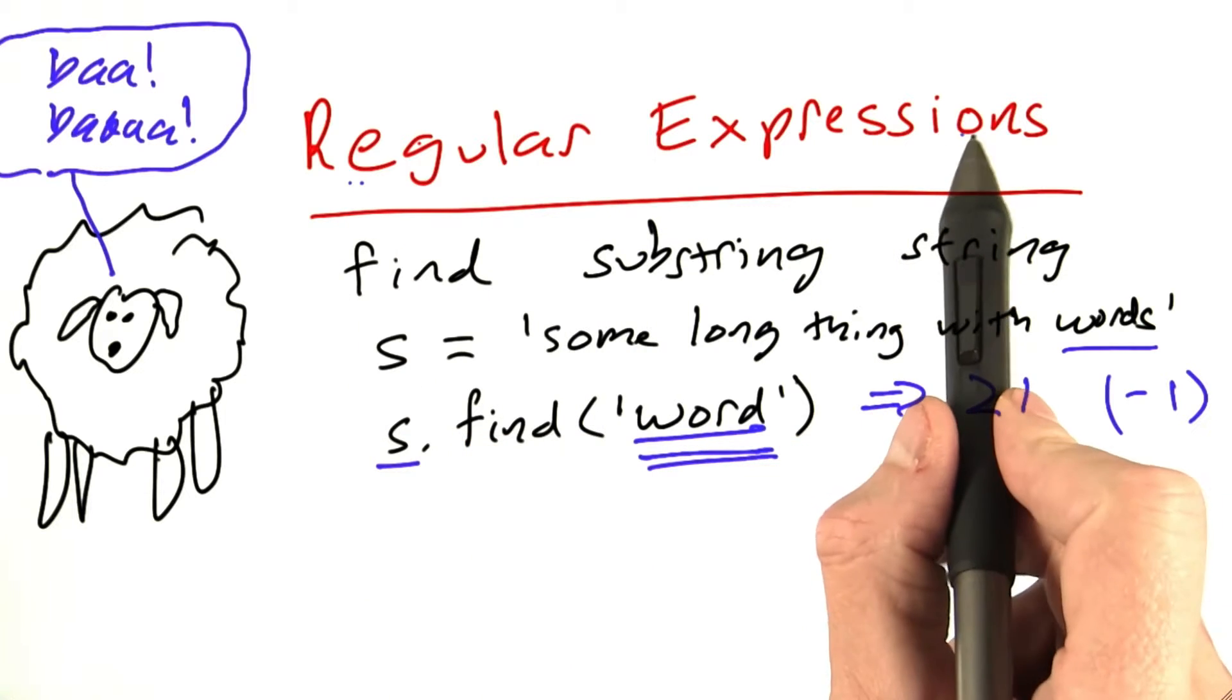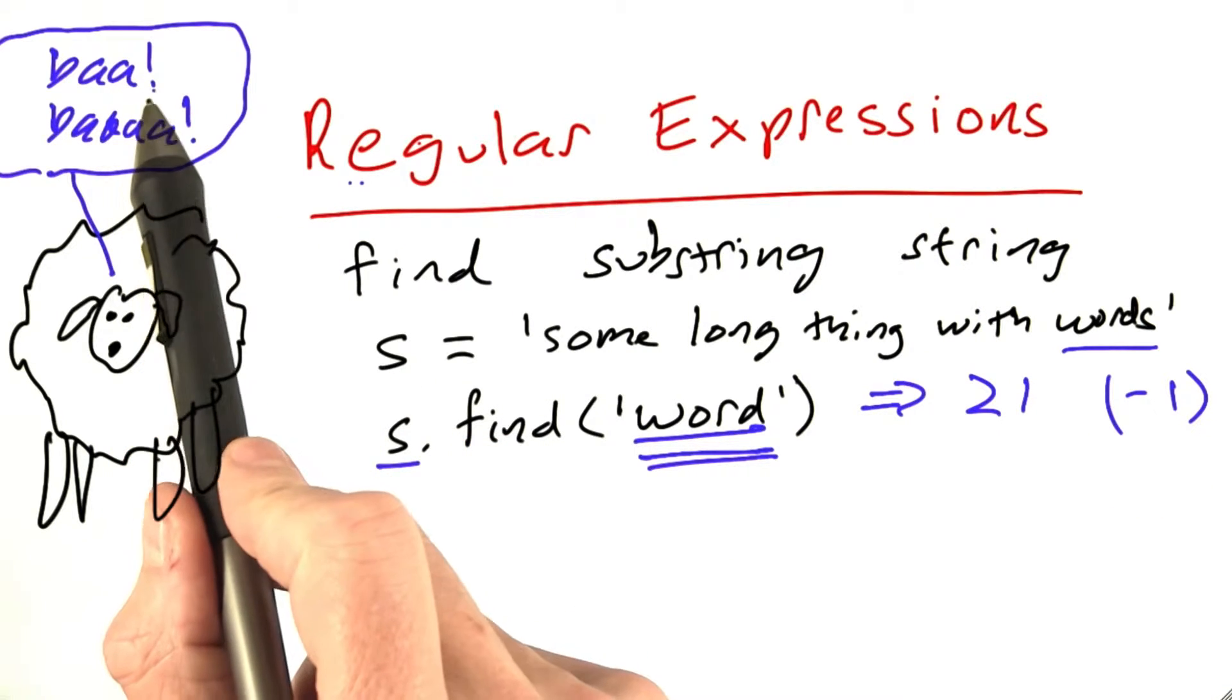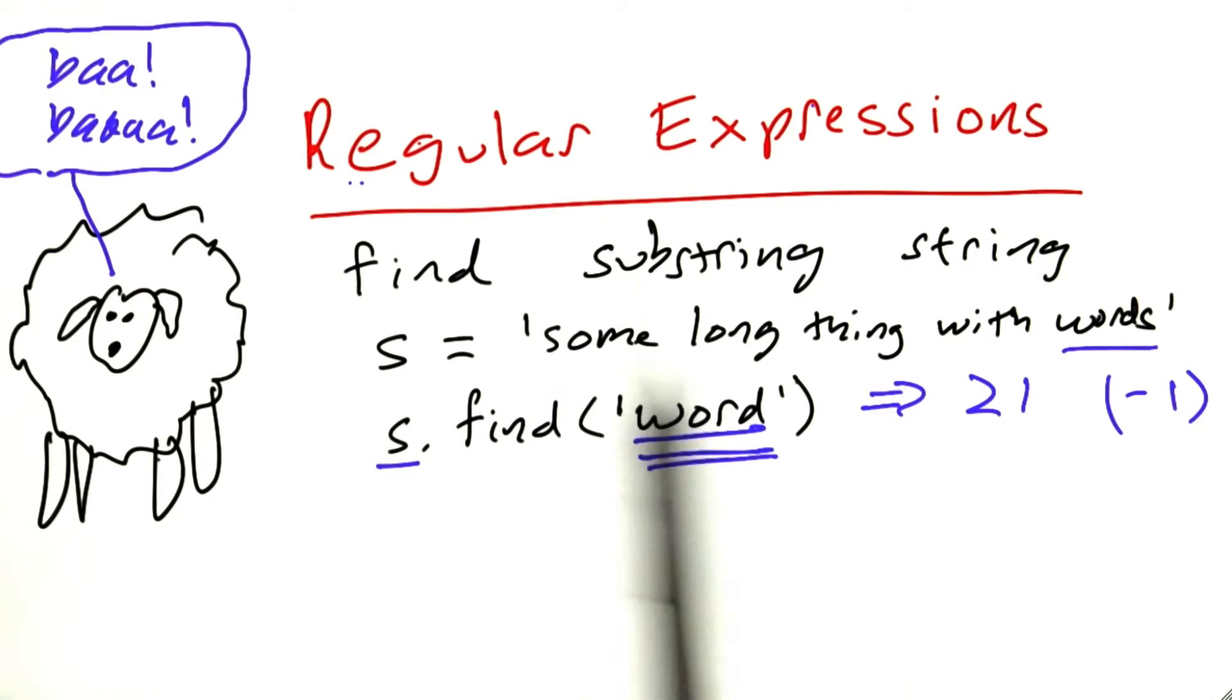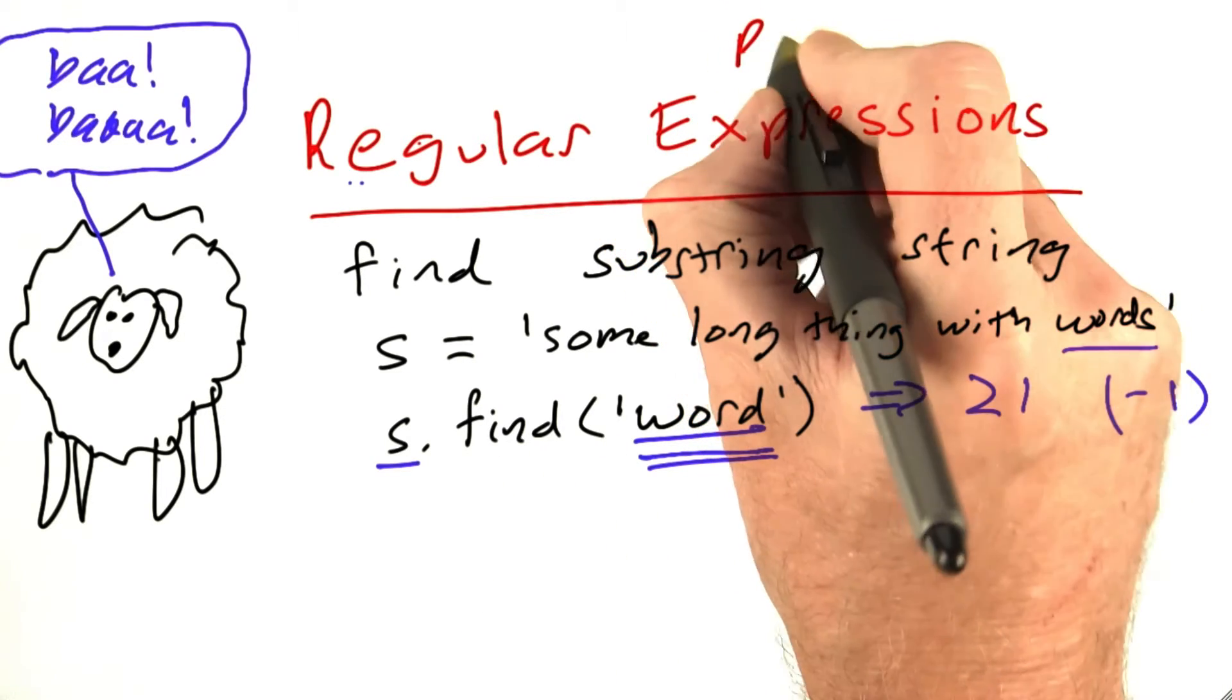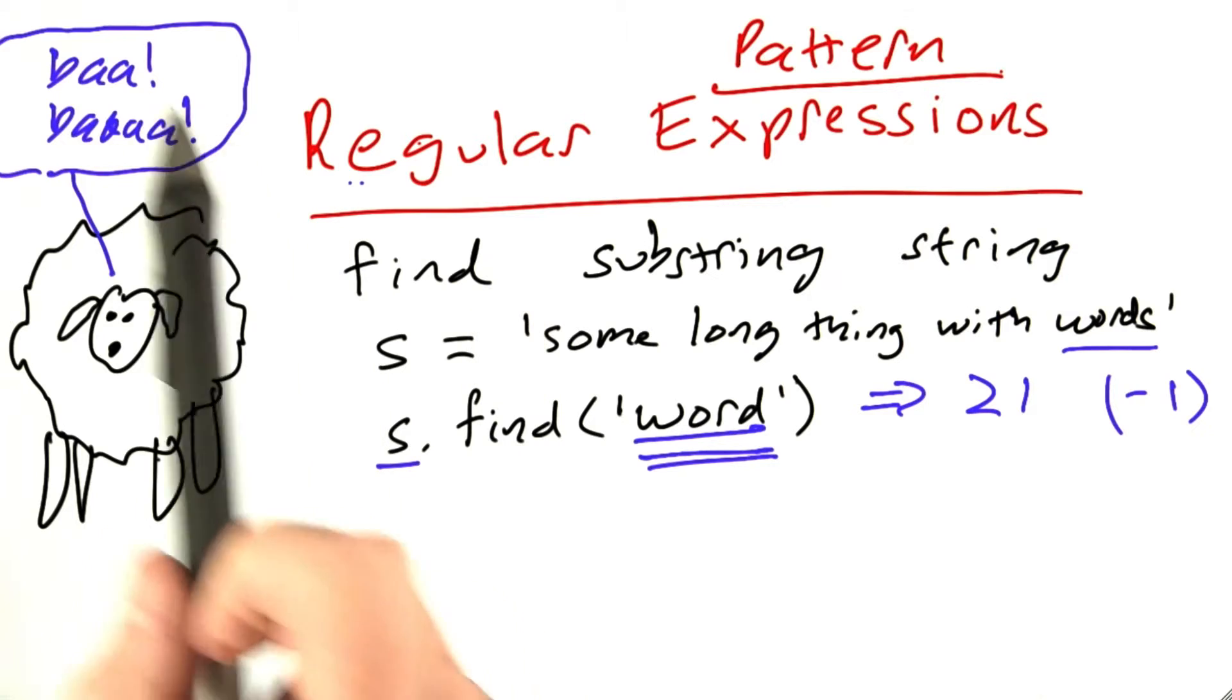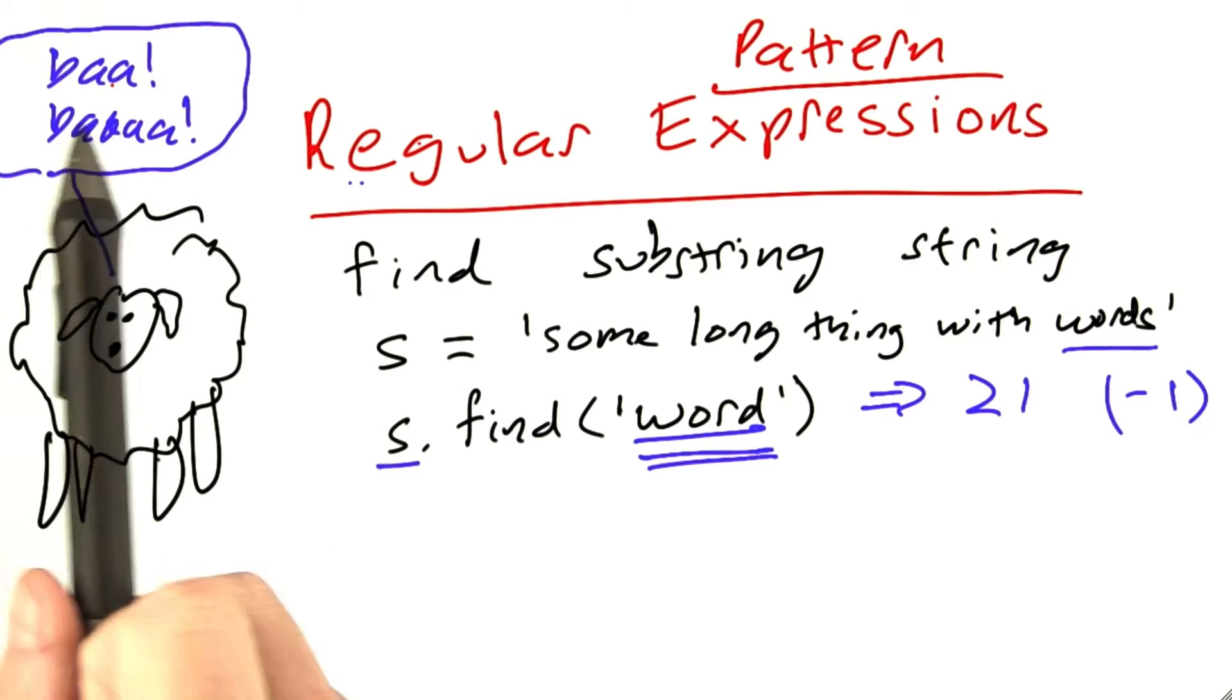And so what a regular expression is is a way of describing that infinite set of words and an interface that allows you to find them. So a regular expression, which we'll also call a pattern, is a way of describing this infinite set of possible words.